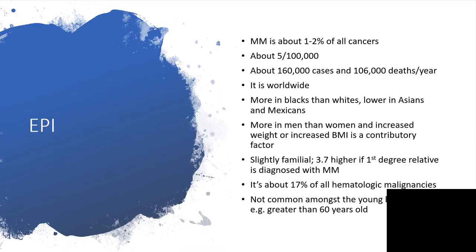MM is about one to two percent of all cancers, about five per one hundred thousand, and about 160,000 cases and 106,000 deaths per year worldwide. It is more common in Blacks than Whites, lower in Asians and Mexicans. It is more in men compared to women, and very common among people with increased weight or increased body mass index. It is slightly familial, 3.7 in an enforced degree relative compared to the rest of the population. It is about 70% of all hematological malignancies.